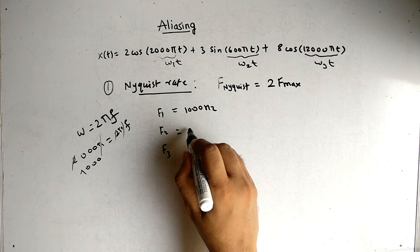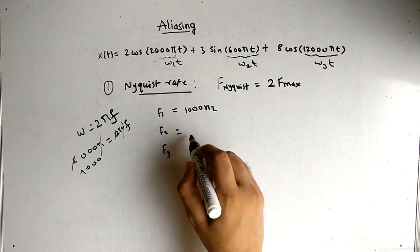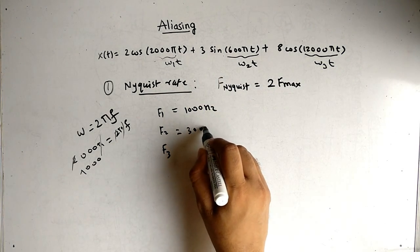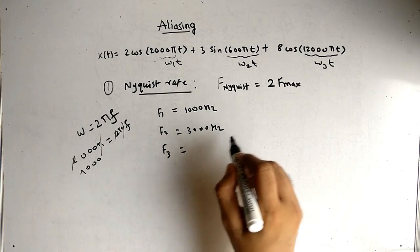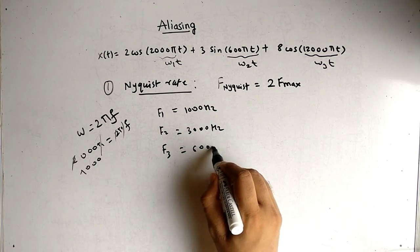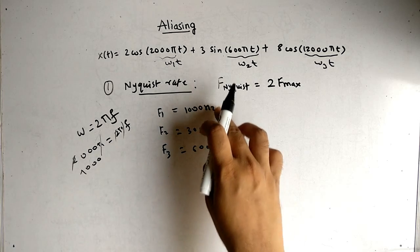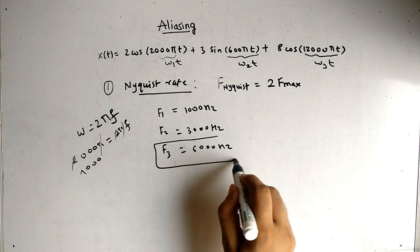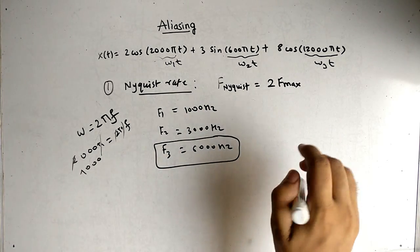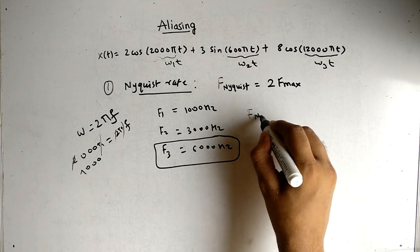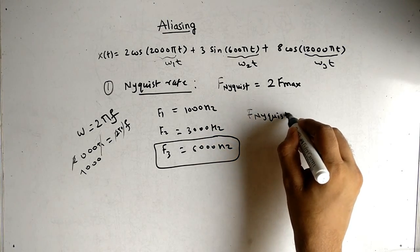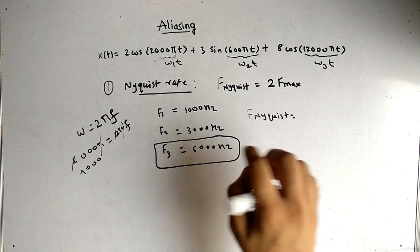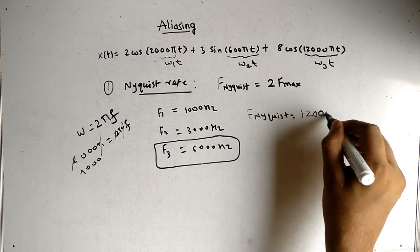Similarly for the second, dividing by 2 pi, we get 3000 hertz. For the third we get 6000 hertz. The highest among them is f3. So we have to multiply this by 2. Our Nyquist rate is equal to 2 times 6000, that is 12,000 hertz.